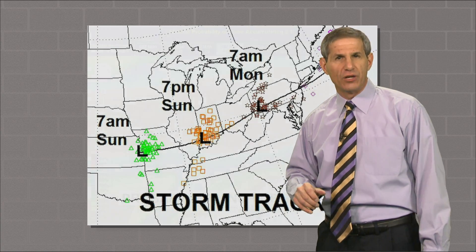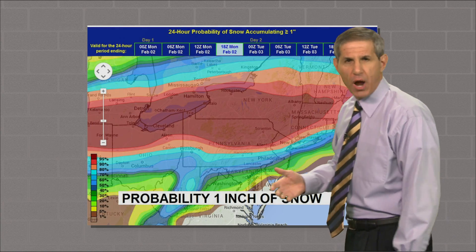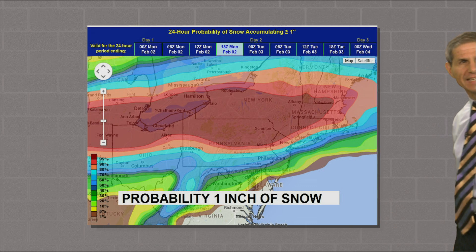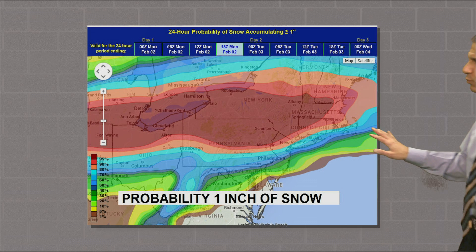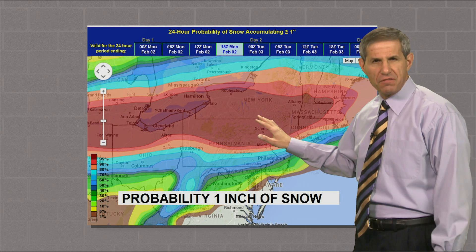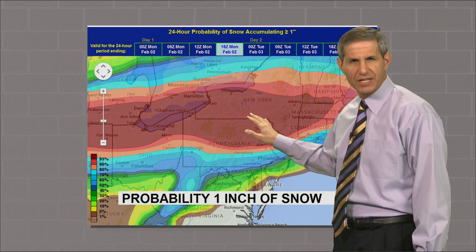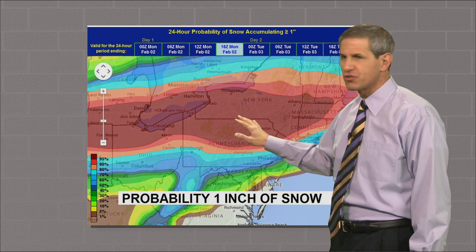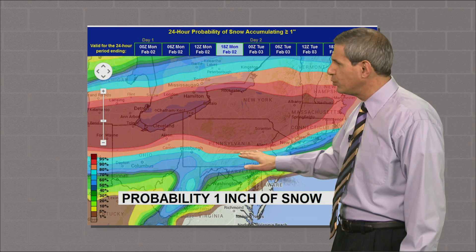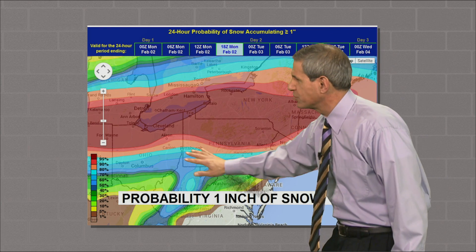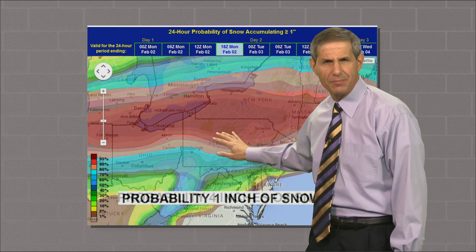Here's another way to look at uncertainty. This shows the probability of getting at least one inch of snow based on an ensemble of 57 computer runs, including some from the European model. The maroon means that more than 95 percent of those solutions predicted an inch of snow or more, while anywhere in blue is above 40 percent. By the way, Pennsylvania is right in here in case you can't see it.